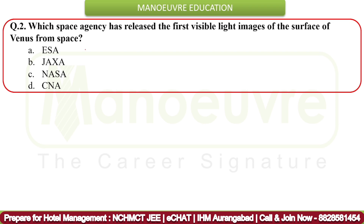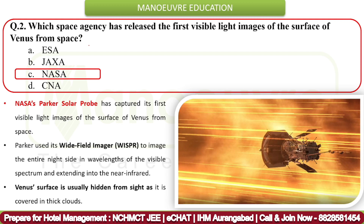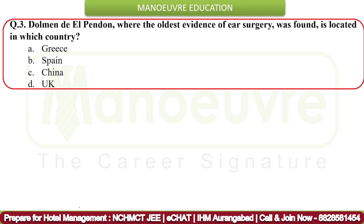Next question: Which space agency has released the first visible light images of the surface of Venus from space? The correct answer is NASA. NASA's Parker Solar Probe captured its first visible light images of the surface of Venus. Parker used its wide-field imager WISPR to image the entire night side in wavelengths of the visible spectrum extending into the near infrared. Venus's surface is usually hidden as it is covered in thick clouds.